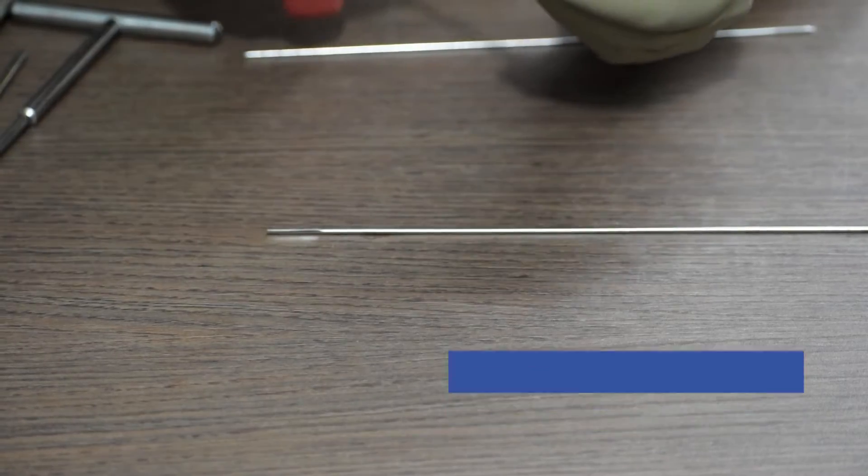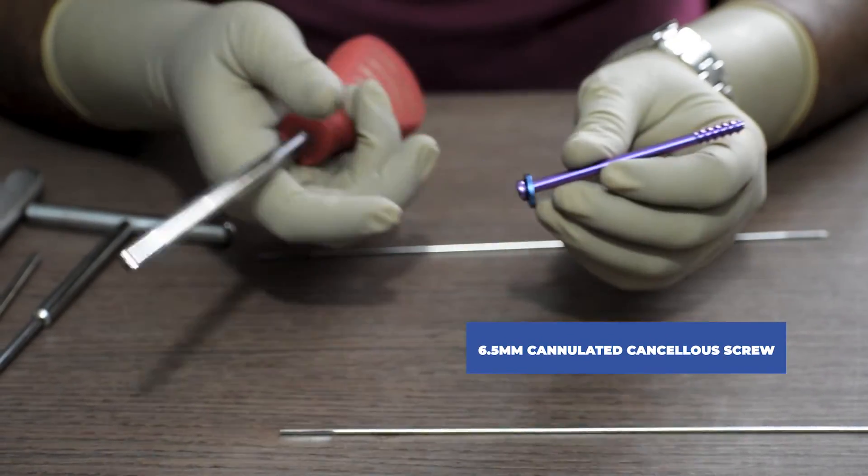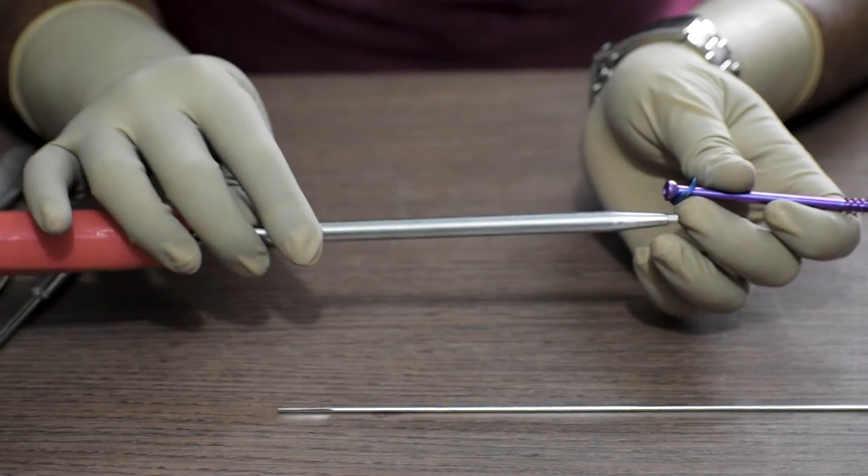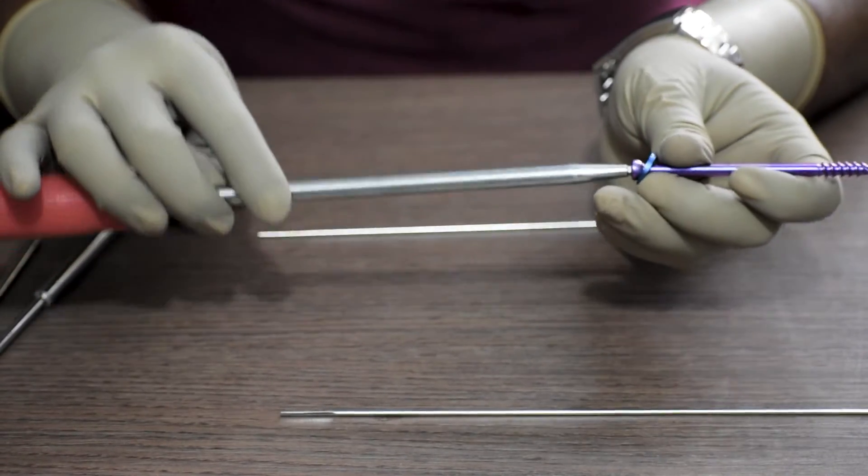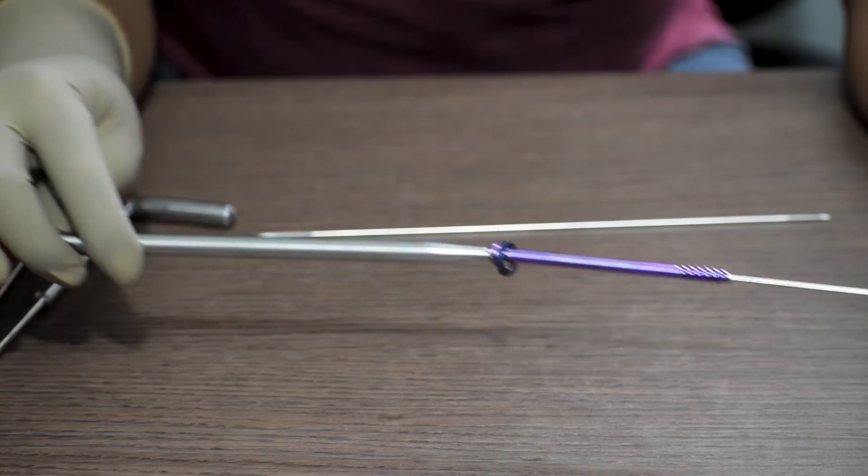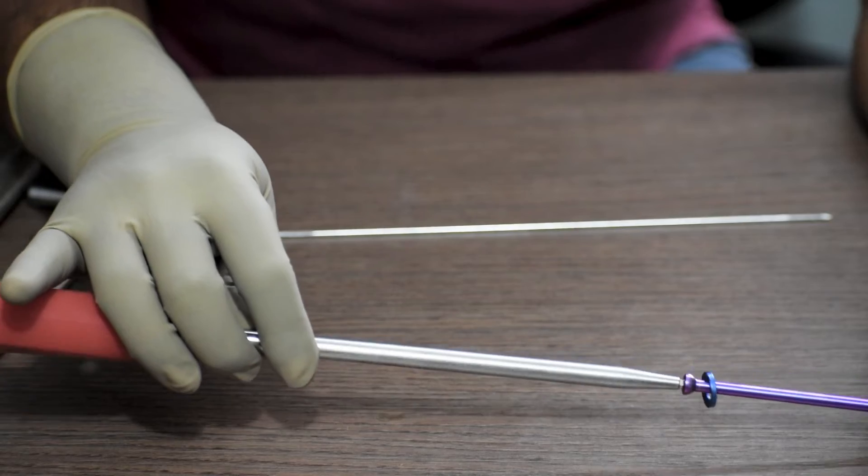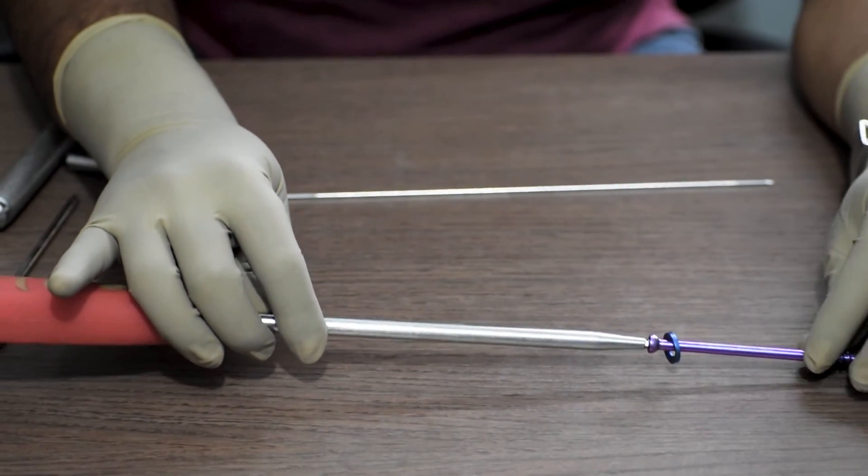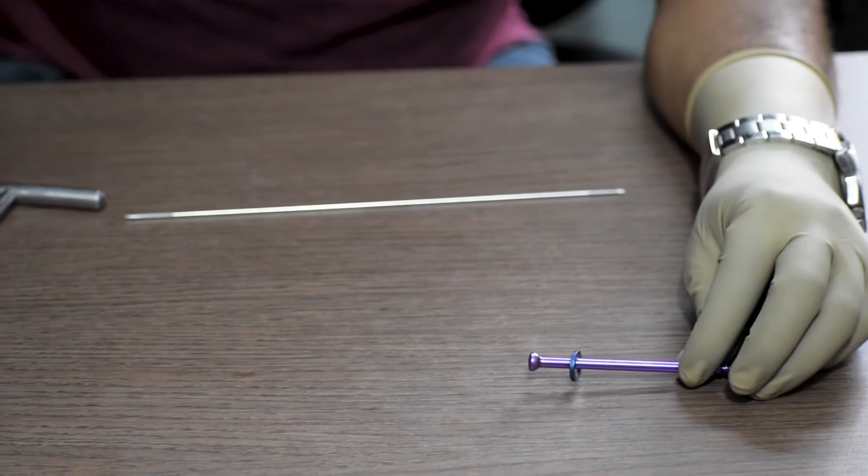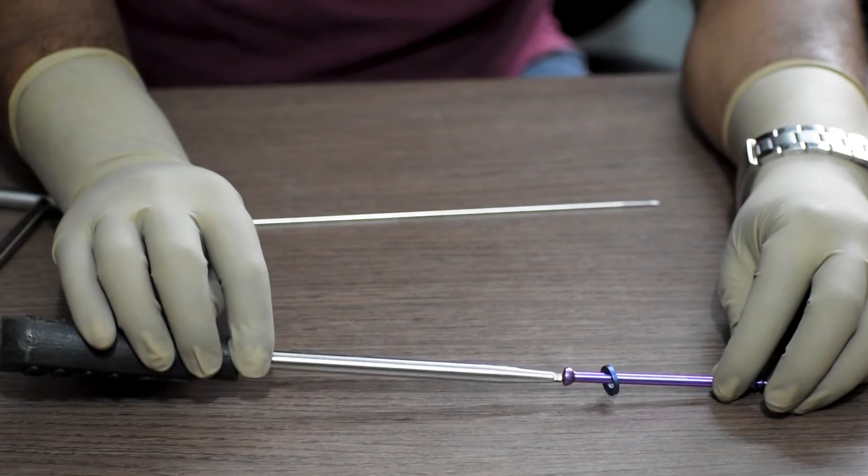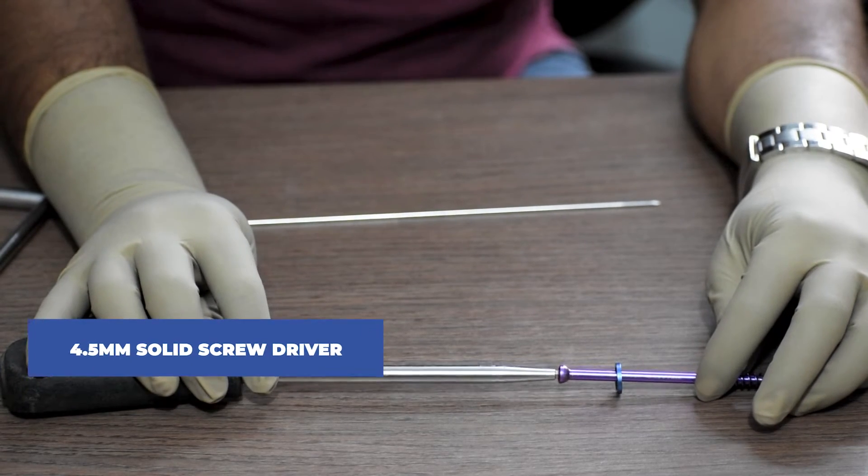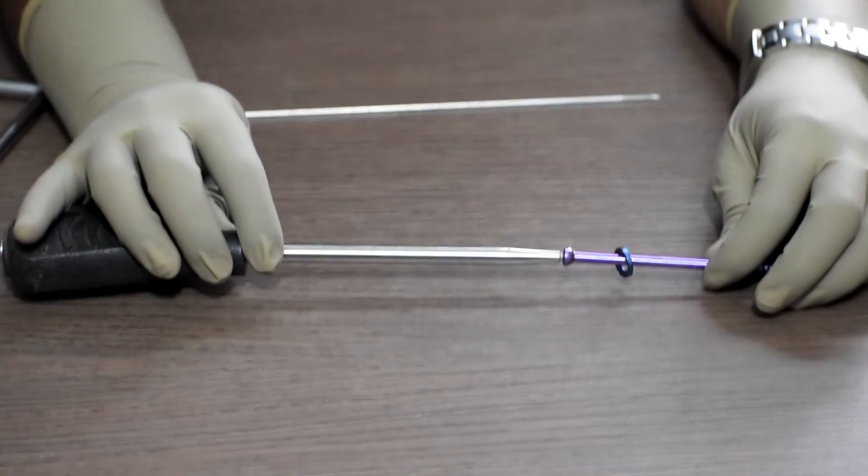Once the tapping is done, we will take a 6.5mm cannulated cancellous screw with washer of the measured length. And with the help of a 4.5mm cannulated screwdriver, we are going to fix the screw. Thereafter, we will take out the cannulated screwdriver and the guide wire while the 6.5mm cannulated cancellous screw stays back. We will use a 4.5mm solid screwdriver in order to give the final tightening to the screw.